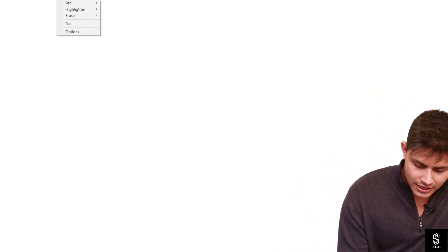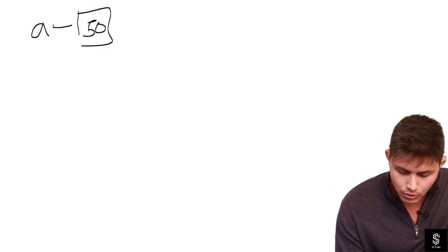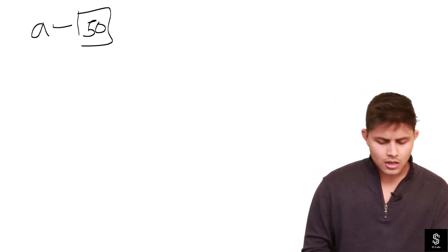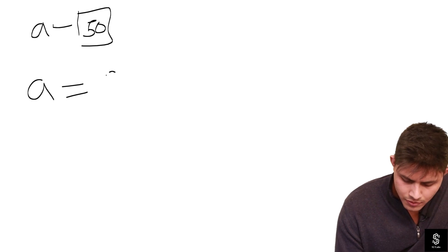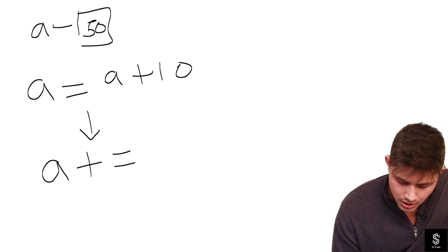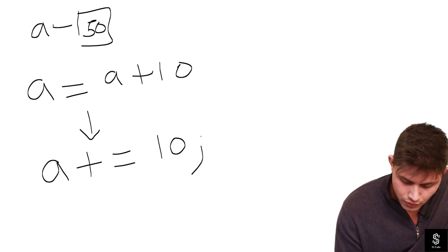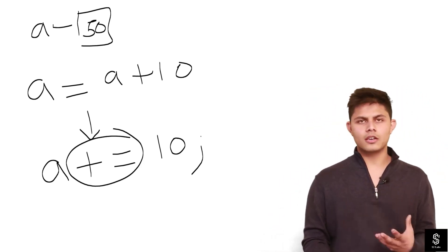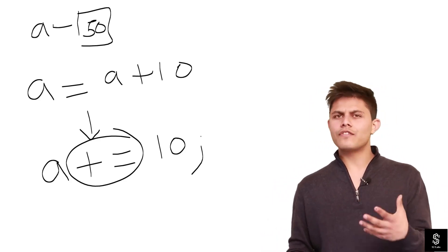If we want to add something onto a variable and store it into that same variable, instead of writing it out fully — imagine there is a variable called 'a' with value 50, and we want to increment it by 10 — instead of writing 'a = a + 10', we can write 'a += 10'. This '+=' is the shorthand operator.